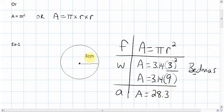28.3. One decimal place we always keep it to. The units are centimeters, and again because it's area, it's squared. So again, don't forget to square the 3 first. Do not go 3.14 times 3 and then take that answer and square it. That's wrong. That doesn't follow BEDMAS.